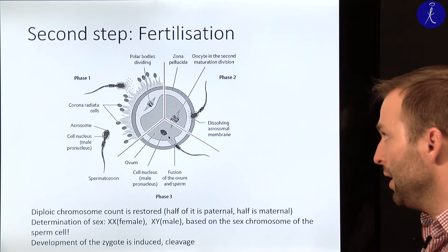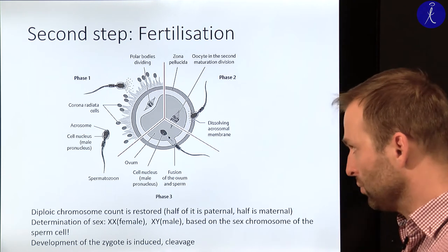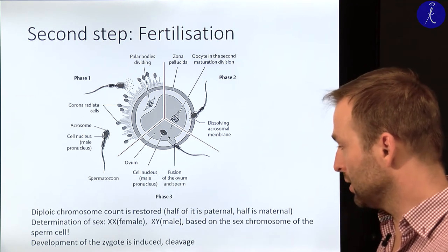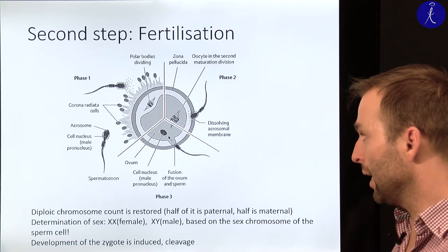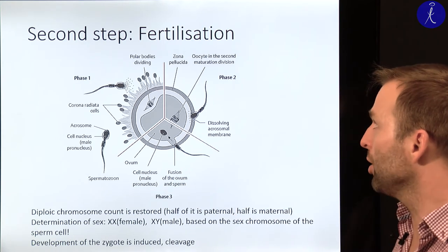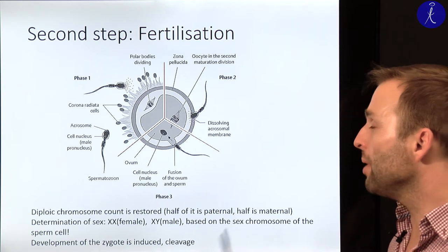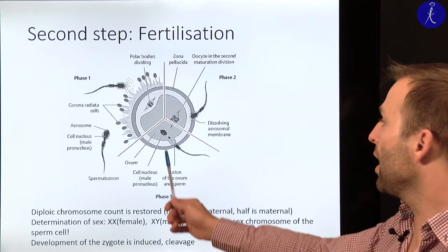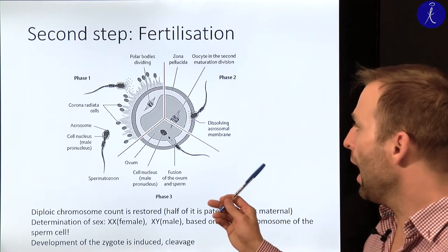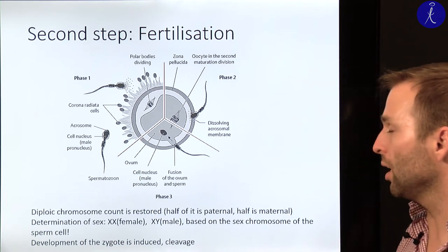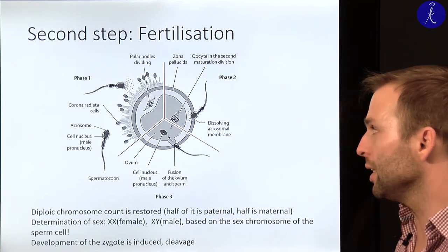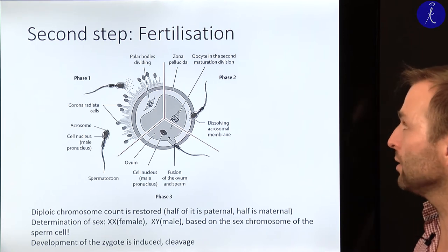After reaching the cell membrane of the egg cell comes phase three: the fusion of the ovum and the sperm. The membranes are united and the head, including the nucleus of the sperm cell, enters the cytoplasm of the egg cell. After this, the egg cell will finish the last meiotic division, the mature egg is made, and then a male pronucleus and female pronucleus are formed — completing the fusion of the egg and sperm cell. This is what ends fertilization.